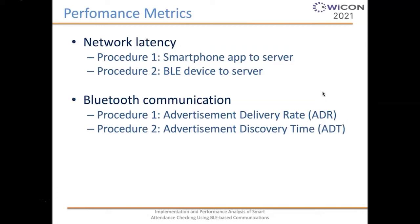For procedure one, we looked at the advertisement delivery rate because the BLE acts as a broadcaster sending to smartphones, and we measured how much of these advertisements are delivered. For procedure two, we looked at the advertisement discovery time, since our BLE device acts as a listener and we needed to know how long it takes to discover the number of different smartphones in the room.